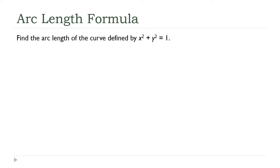I want to find the arc length of this curve, and hopefully that's familiar to you — it's the formula for a circle whose radius is one, it's a unit circle. Obviously we know what the answer needs to be, right? Because we have a formula for circumference. I think this is a good example, and we'll know for sure at the end of the day if our method works here.